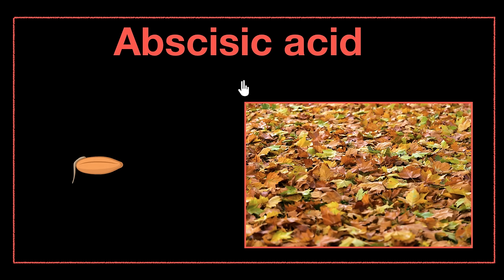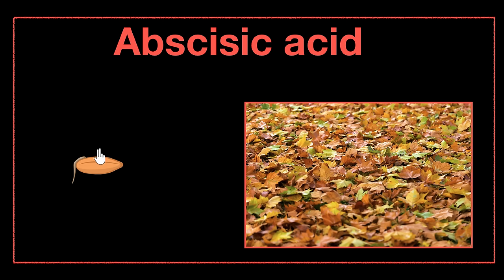Another job of abscisic acid as a growth inhibitor can be seen in seed germination. If there's a lot of abscisic acid in the seeds, it will not allow them to germinate. This is important because we need seeds to germinate in the right conditions. For example, when seeds are in the desert, a lot of abscisic acid builds up and prevents growth. When it starts raining, the rain washes the abscisic acid away, and then gibberlin can start acting and making the seed grow.